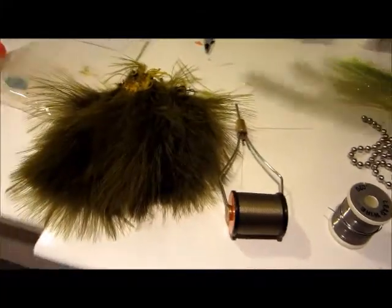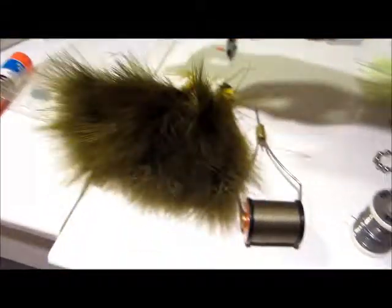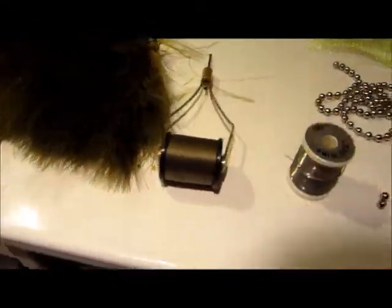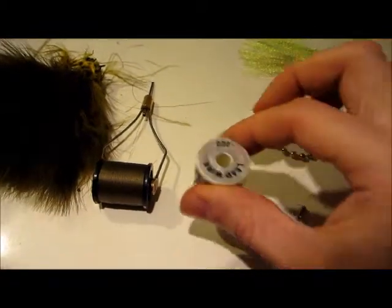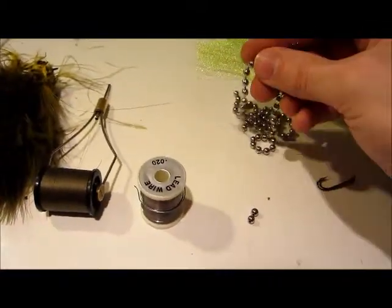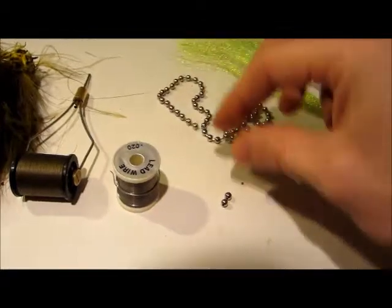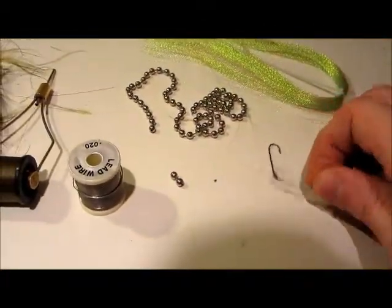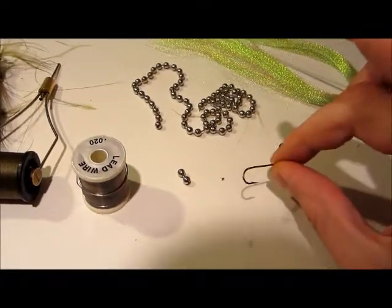What you'll need is marabou feathers, olive. Again, you can use any color you'd like. Match the thread, so there's olive thread, lead wire, bead chain for eyes cut into two pieces. I got streamer hooks, these are size six, and a little bit of crystal flash.